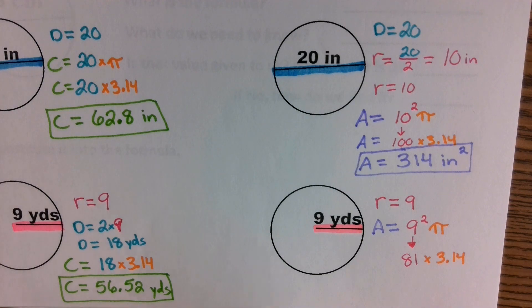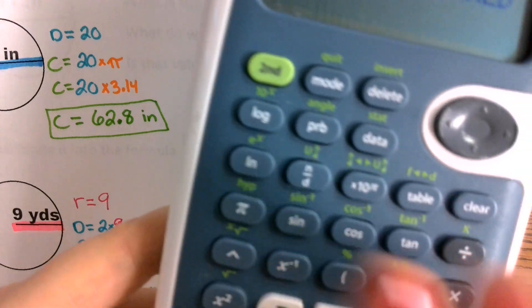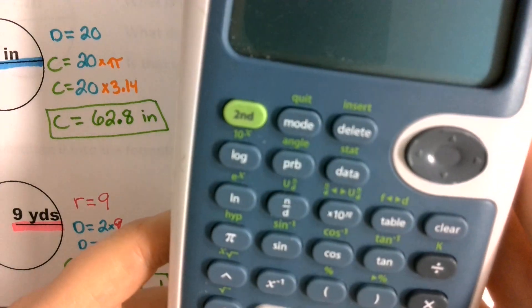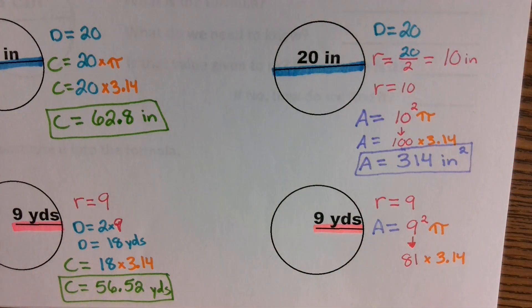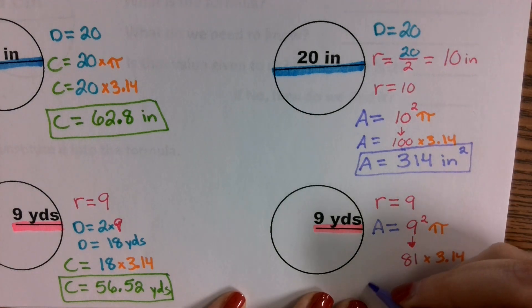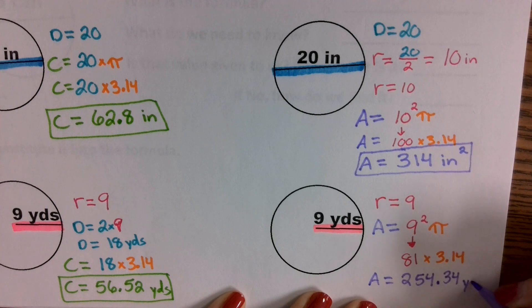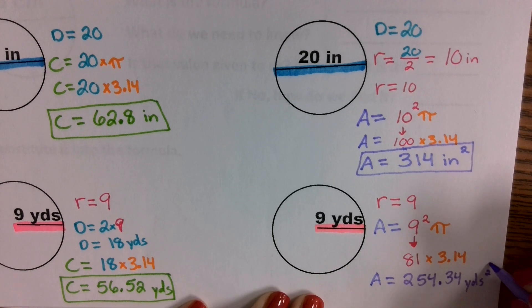Do not use the pi button — I know our calculators have a button labeled pi, but don't use that. Just use 3.14, because that's going to give you your best estimating value. When they round it, you want to use that value of 3.14. That's going to come out to 254.34, and that is yards squared.